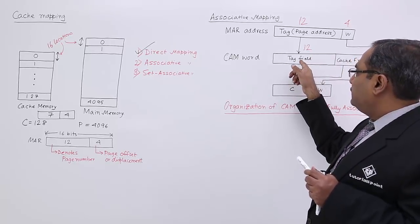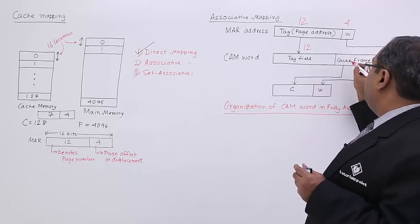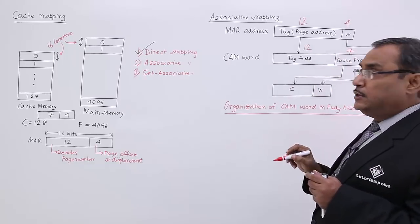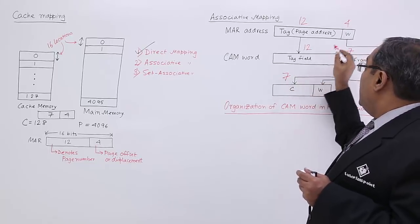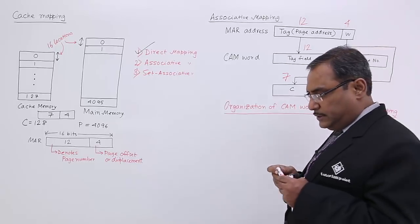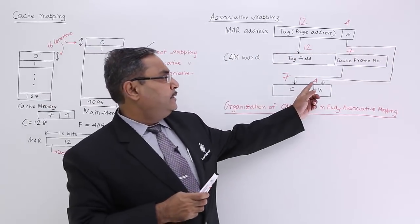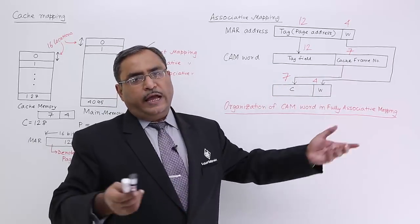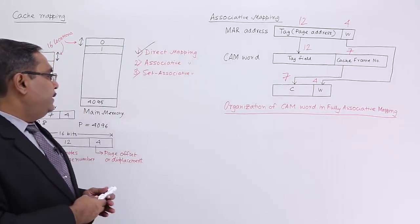After getting the required pair, it will get the required cache frame number, which will be of 7 bits. This 7 bits will be coming as the frame number and this particular 4 bits will be coming as the frame offset. So that is the cache memory address — 7 and 4, giving 11 bits.